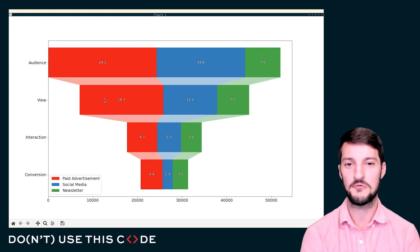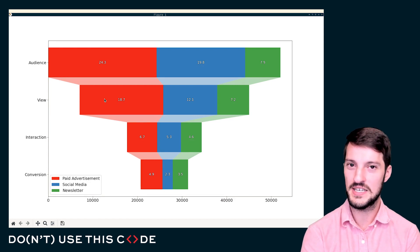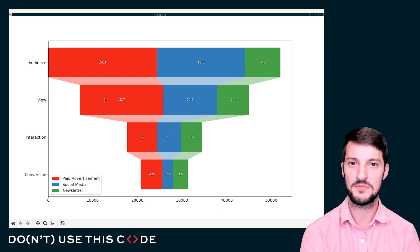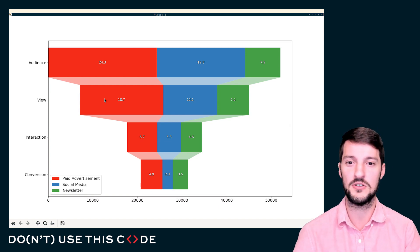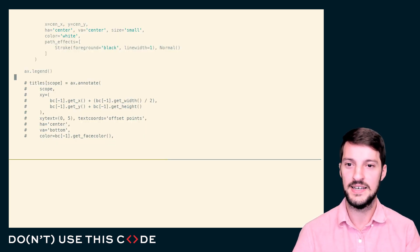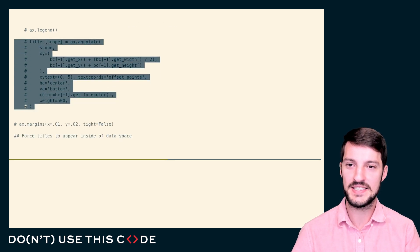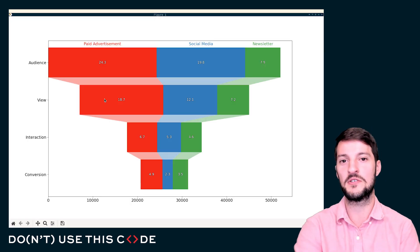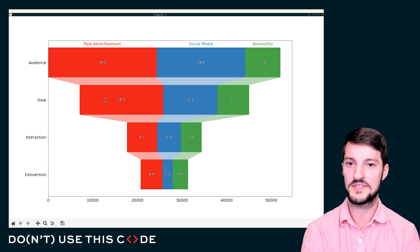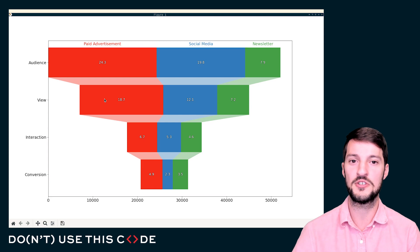One thing I really dislike in a lot of charts is the reliance of a legend. I need to drop my eyes all the way to the lower corner of this plot, look at paid advertisement, see that it's red, and then I can make sense of the red color that you see on my chart. I don't like having my end user needing to scan my entire chart in order to make sense of it. Instead, what I'm going to do is add some titles above each of the bars and make those titles the same color as the bars that they represent. Now, I need to do much less scanning in order to make sense of this chart.